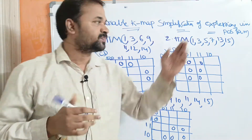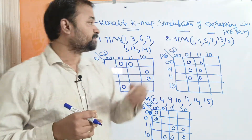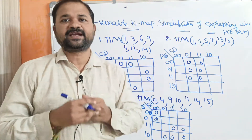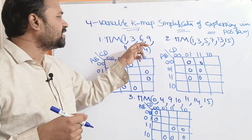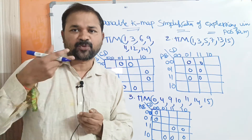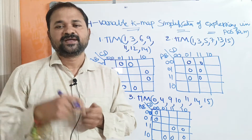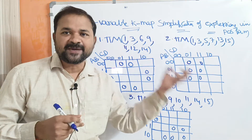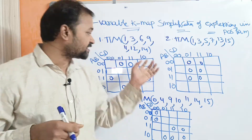Let us discuss the simplification of boolean expressions in POS form with the help of a four-variable Karnaugh map. We have three examples to solve. The first example is π M of (1, 3, 6, 9, 11, 12, 14). Here π stands for product and capital M stands for max term. For max terms, we write zero in the corresponding cell. So zeros are placed in the corresponding cells for all three problems.